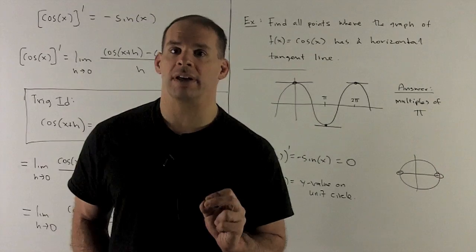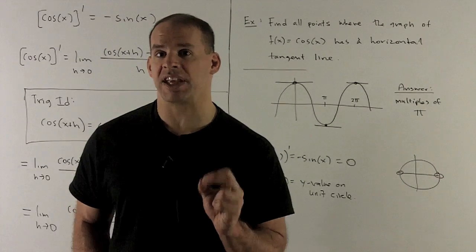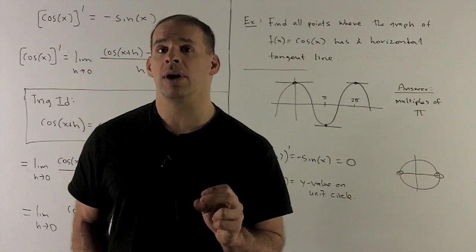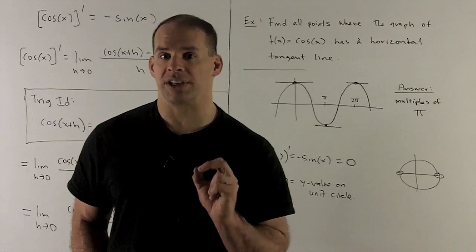How do we do that? Well, we compute our derivative. Derivative of cosine, we just saw as minus sine. I set that equal to 0. And now it's just unwinding what the trig says.